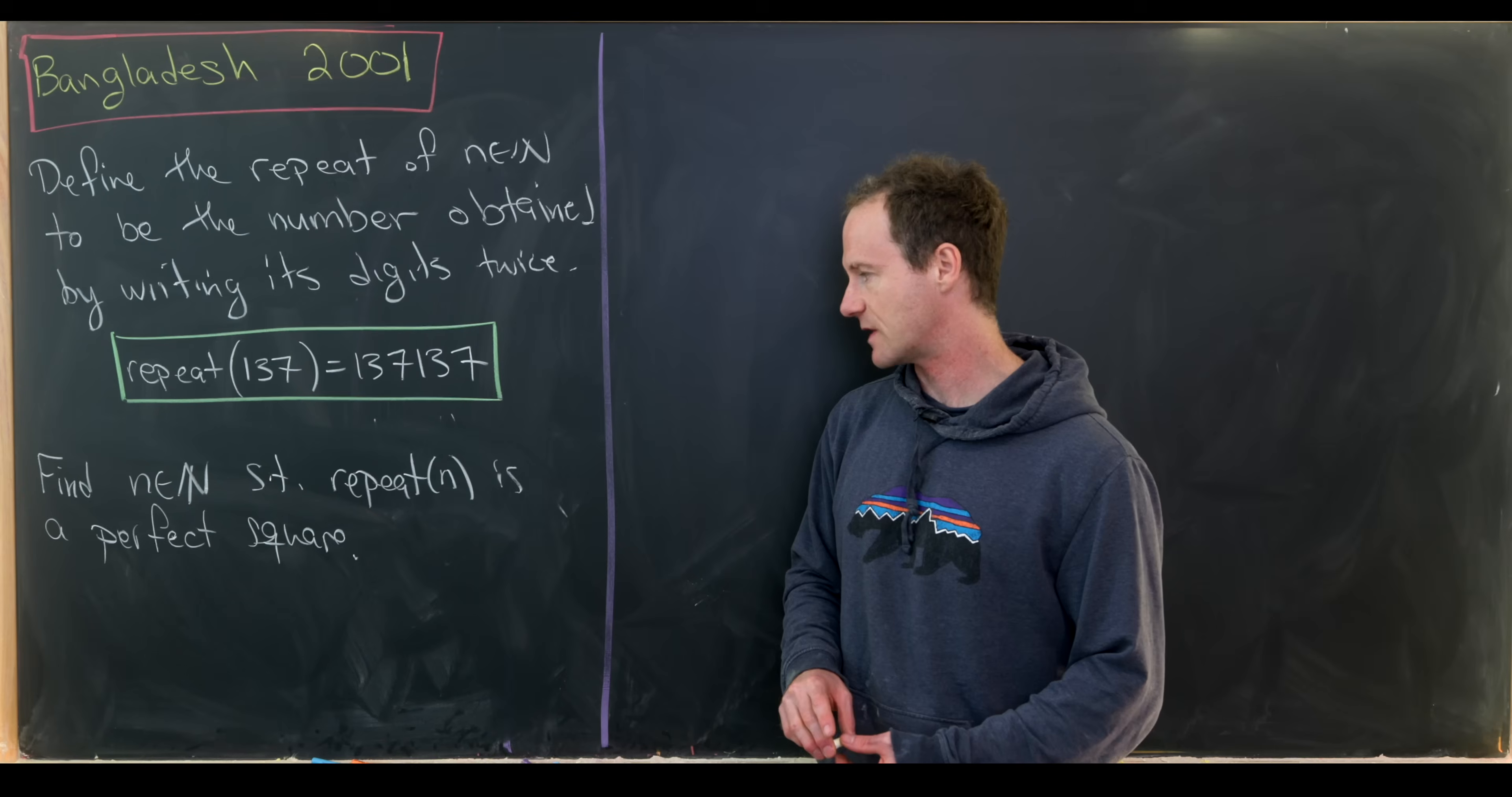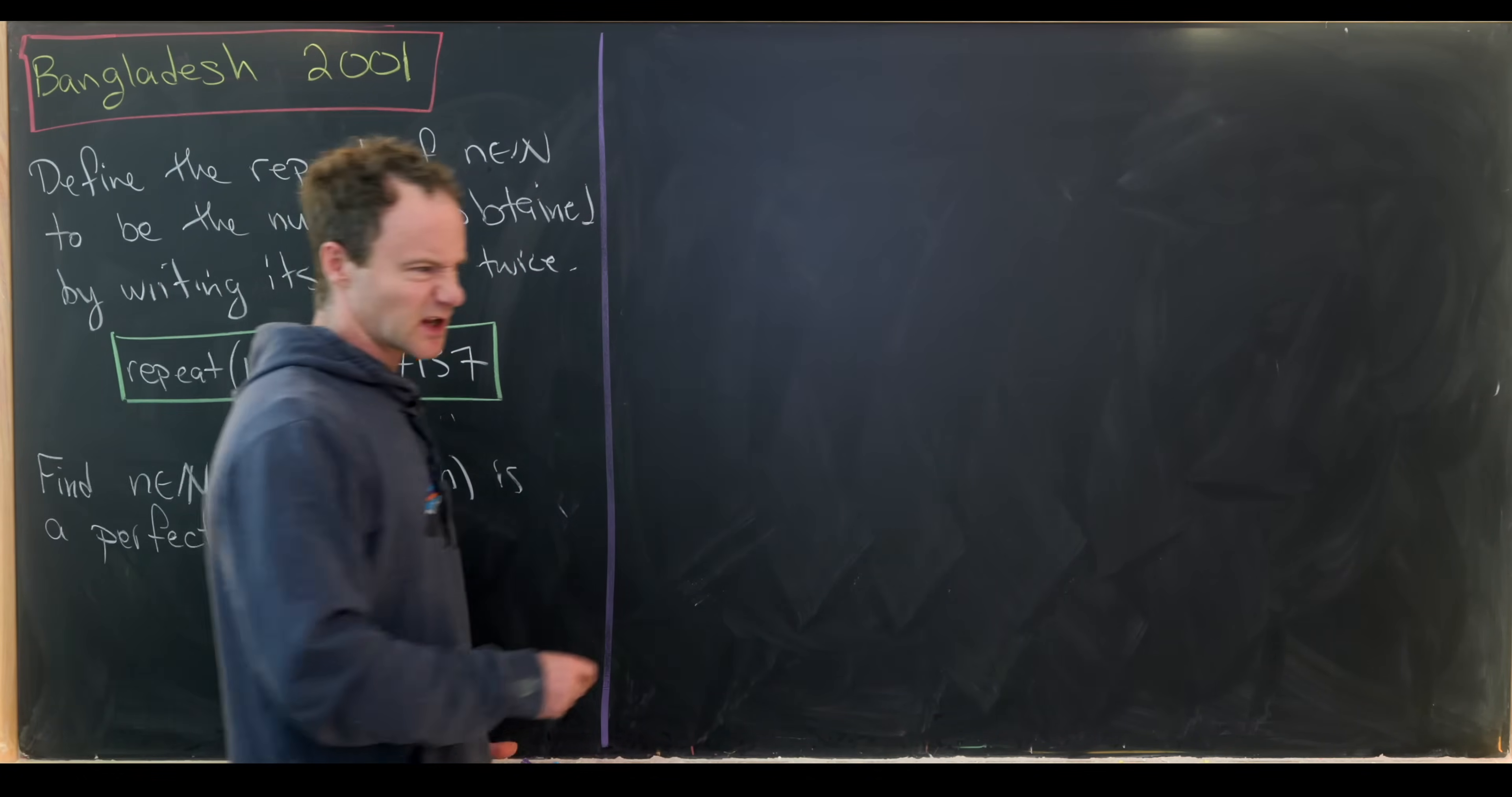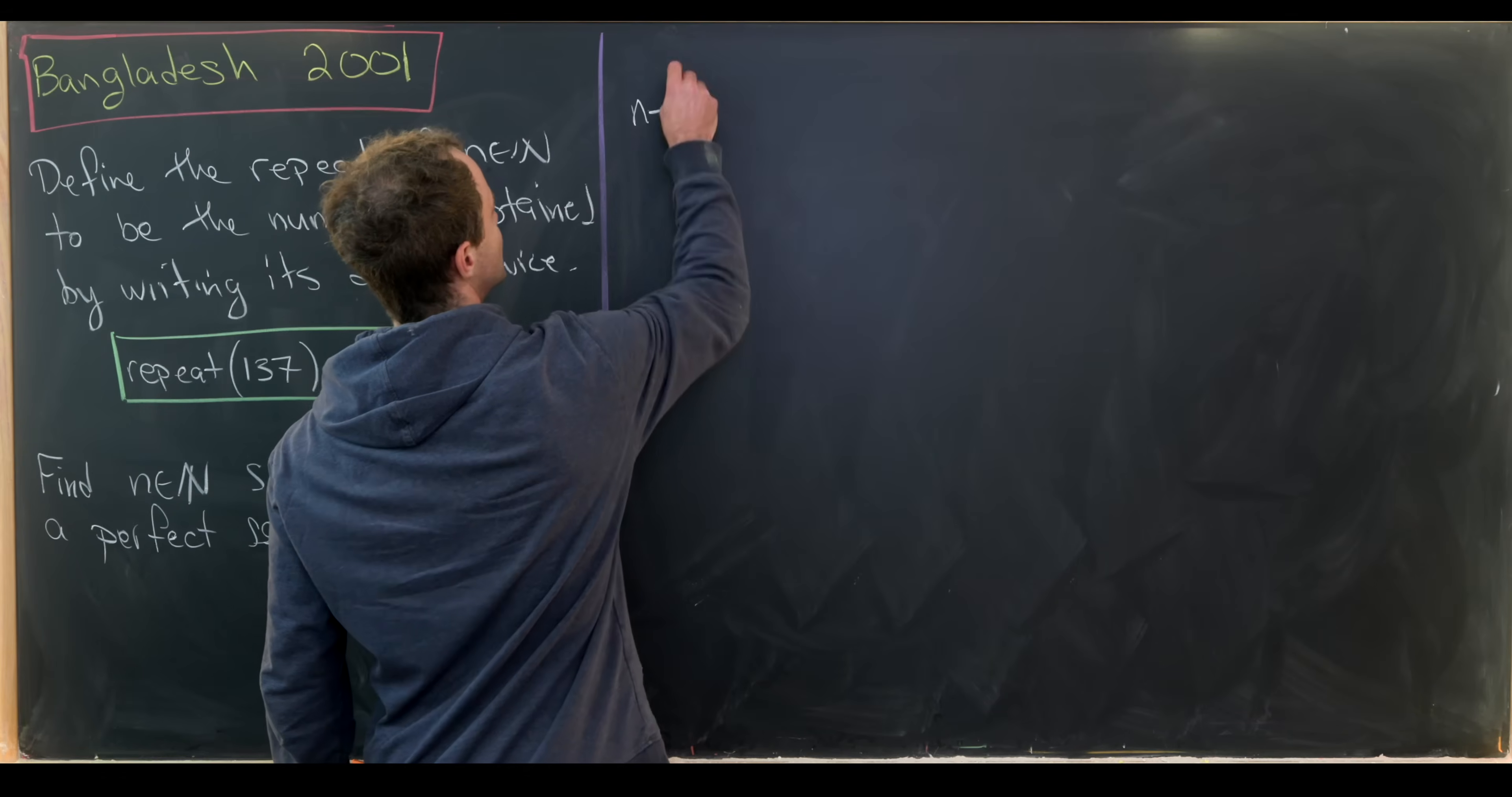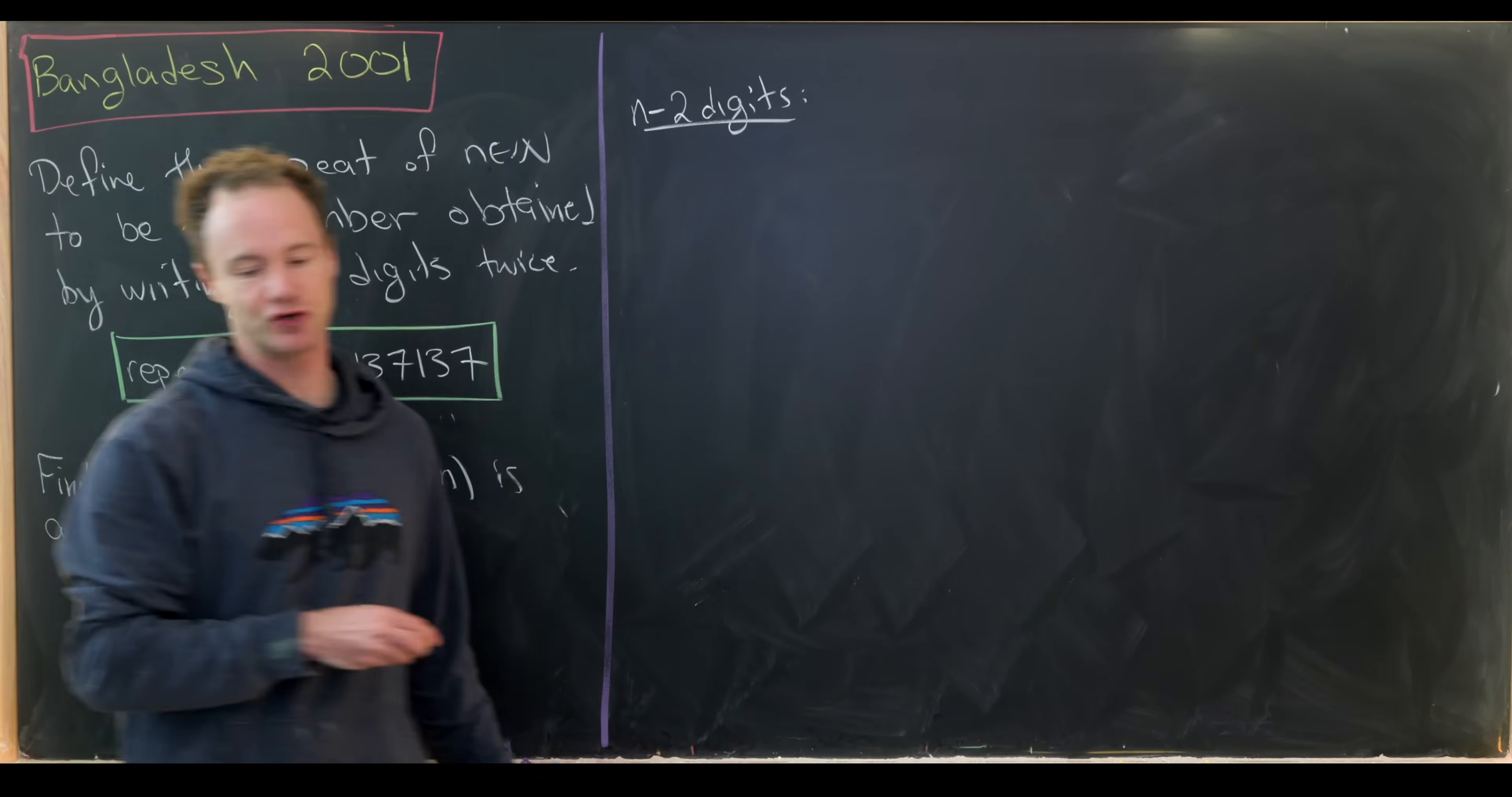So let's look at our goal here. Our goal is to find a natural number n such that the repeat of n is a perfect square, if possible. Let's look at a couple of simple examples first to see if we can get started.